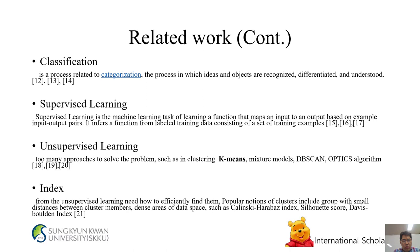Related work continued. Classification is a process related to categorization — the process in which ideas and objects are recognized, differentiated, and understood. Supervised learning is a machine learning task of learning a function that maps an input to an output based on example input-output pairs; it infers a function from labeled training data. Unsupervised learning includes many approaches such as clustering, image mixture models, DBSCAN, and OPTICS algorithm.